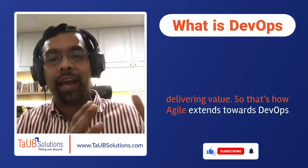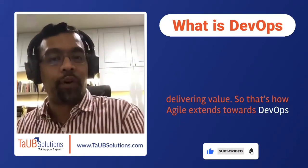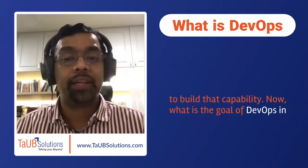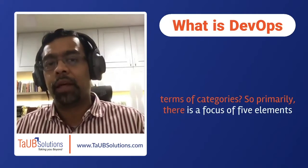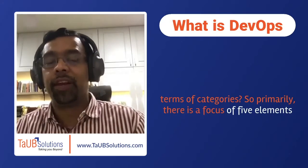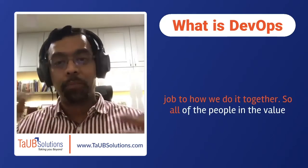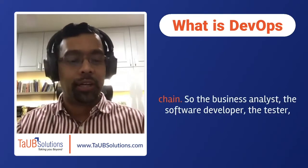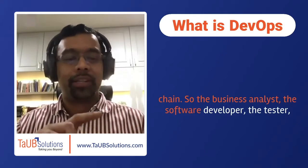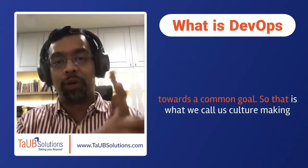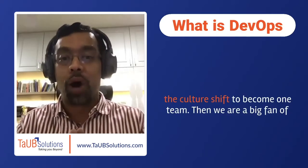That's how Agile extends toward DevOps to build that capability. The goal of DevOps is organized around five elements. Number one is culture — how do we shift thinking from 'I did my job' to 'how we do it together'? All people in the value chain — the business analyst, the software developer, the tester, the QA, the infrastructure operations person — all work together toward a common goal. That is what we call culture: making the shift to become one team.